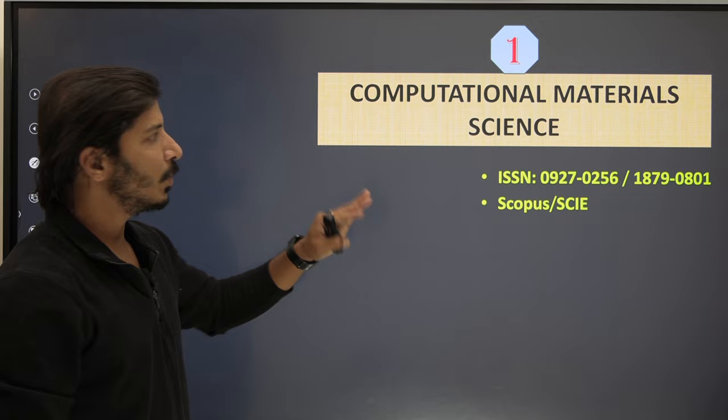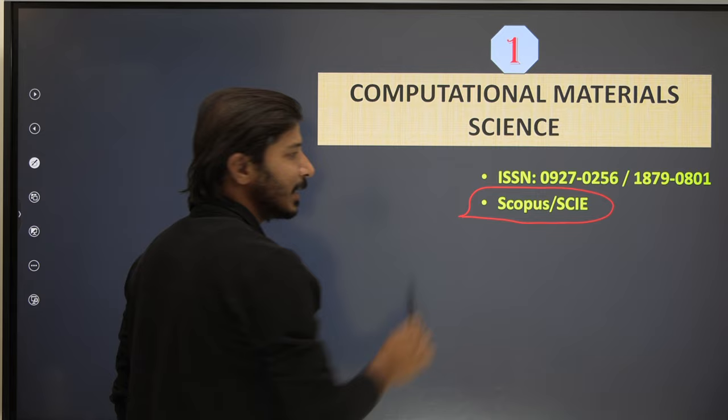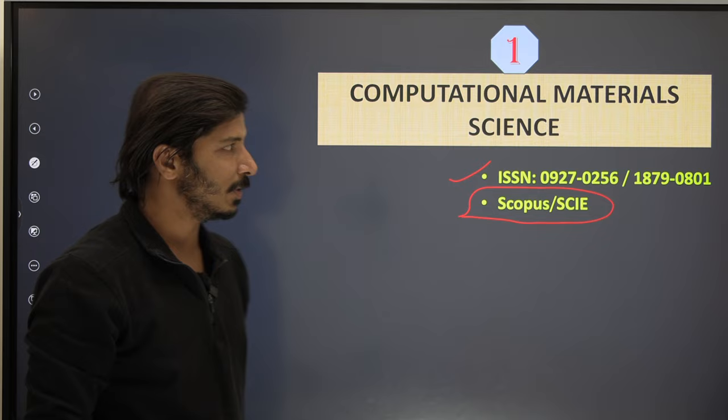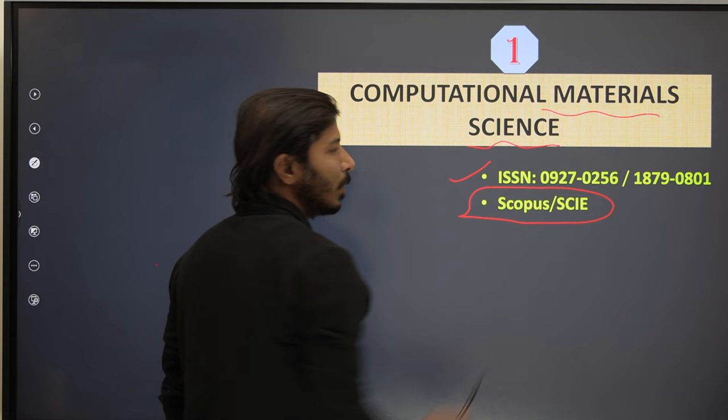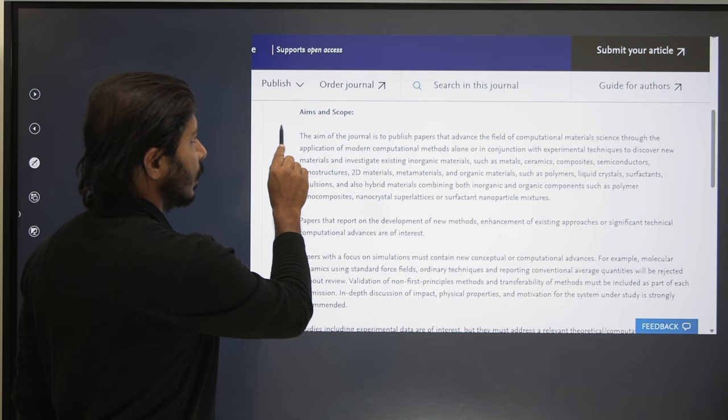If you have not yet subscribed to this channel, please do not forget to subscribe. Now the first journal is Computational Materials Science. This journal is indexed in Scopus as well as the Science Citation Index Expanded database. Do not forget to verify the ISSN number. This is an interdisciplinary journal in the field of material science.